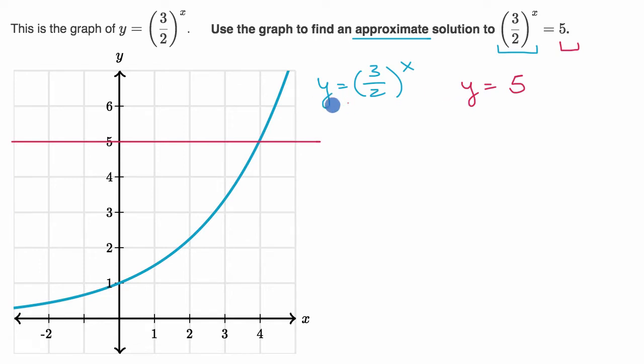And if I'm getting the same y value for that x value in both of these, well then that means that three halves to the x is going to be equal to five. And so we can look at where they intersect and get an approximate sense of what x value that is.